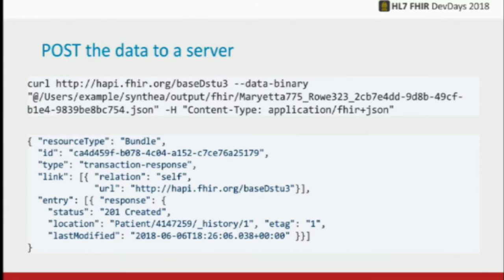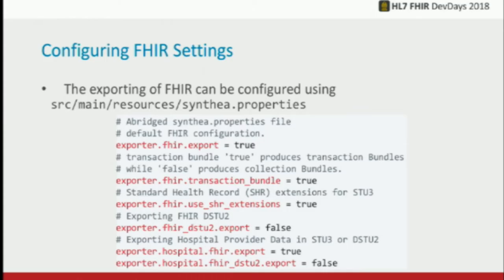After you generate a patient, you could post it to a FHIR server. This is just a curl command pointing at the public instance of HAPI. You say curl, post this URL, tell it you're using application/fhir+json as your MIME type, give it the file, and it will respond saying your patient was created. The response may be bigger or shorter depending on what's in the bundle, but basically you can start posting these bundles to a FHIR server immediately.